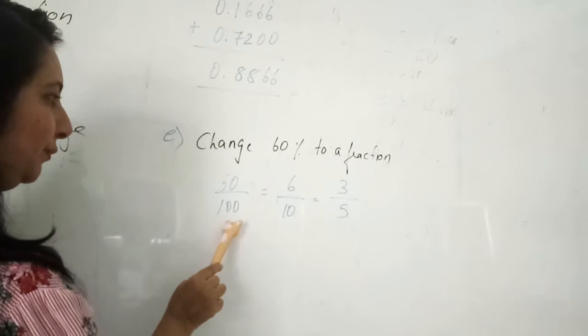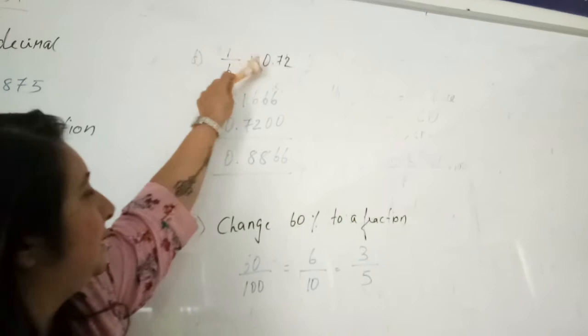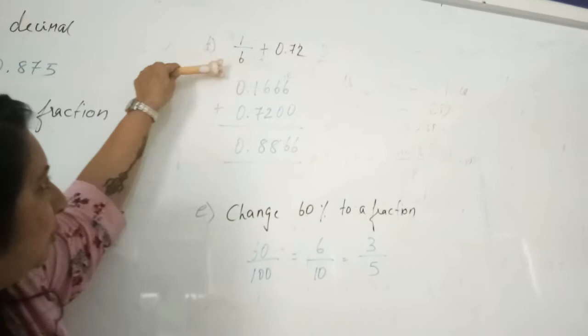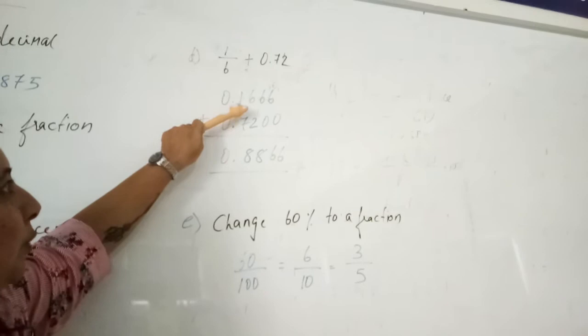Now, if you have a question like this, they ask you to calculate or work out 1 over 6 plus 0.72. You see, this is a fraction and this is a decimal. So if you want to find out the answer, you have to convert one of them. So let's change the fraction. I am going to do 1 divided by 6. So I get 0.1666 plus 0.72 and this is the answer.